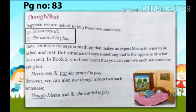Sentence A says something that makes us expect that Meera wants to lie on a bed and take rest — so according to sentence A, we are expecting that Meera wanted to take rest. But sentence B says something that is the opposite of what we expect. According to sentence B, she wanted to play instead of taking rest.